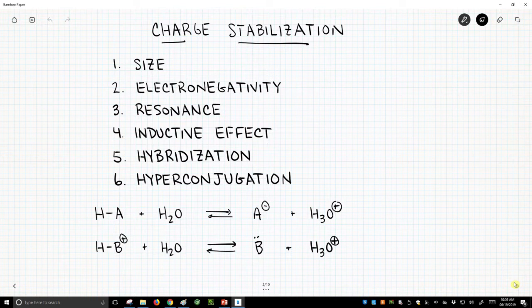Turns out the size of the atom that bears the charge is important, the first one. The electronegativity of the atom that bears the charge. Resonance is hugely important. This is a way we can spread out charge electrons in p orbitals. There's the inductive effect that's also very important, and probably less important are the two bottom ones, hybridization and hyperconjugation.